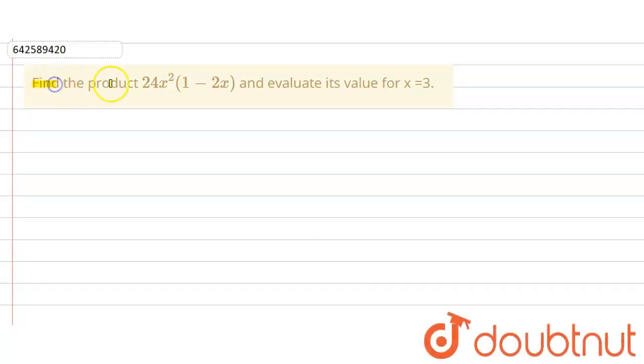In the given question we have to find the product 24x²(1-2x) and evaluate its value for x equals 3.